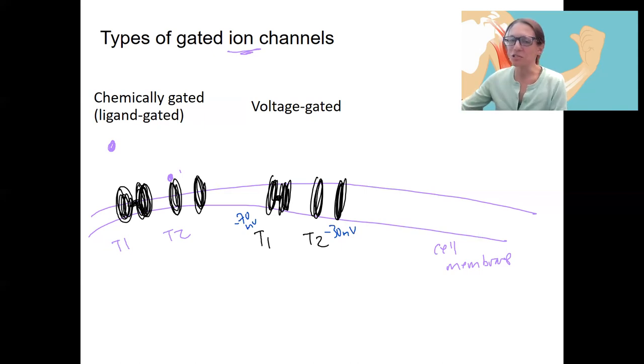There's a variety of different types that can be opened by different changes in voltage, voltage electricity, right? And a lot of different ions.